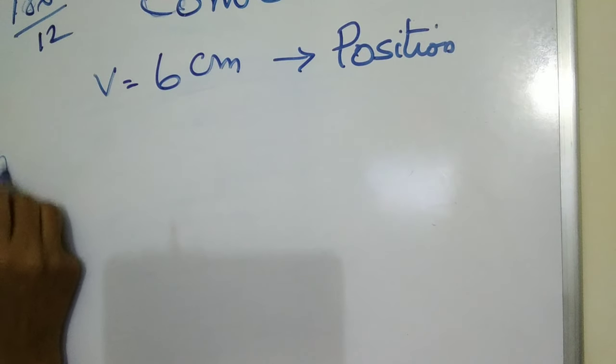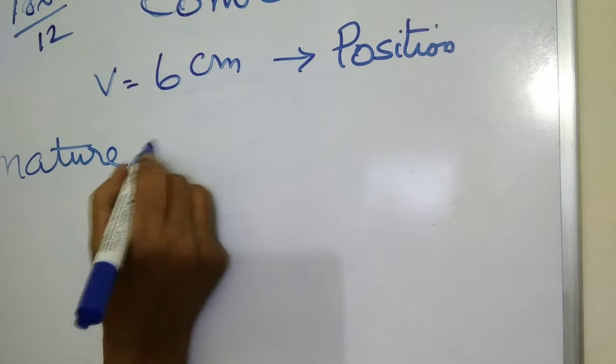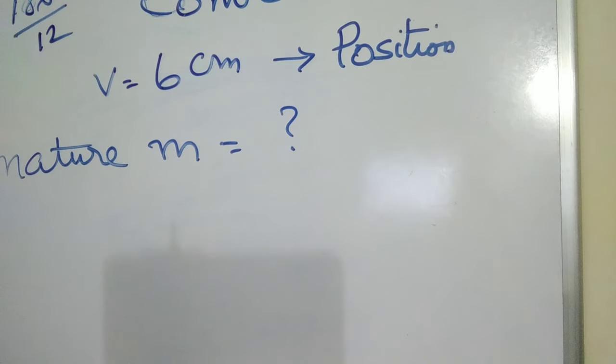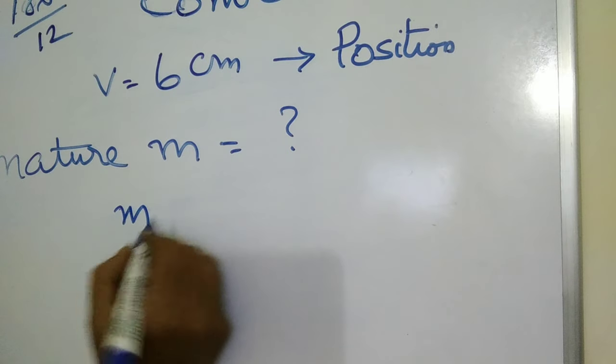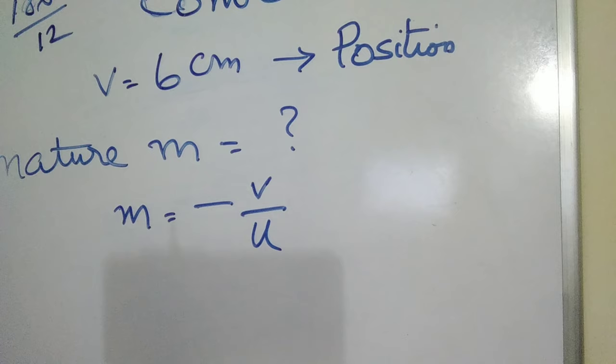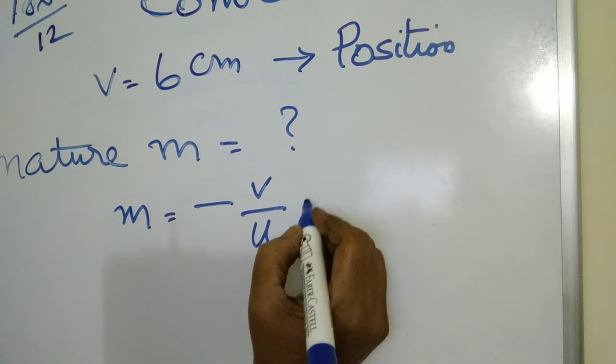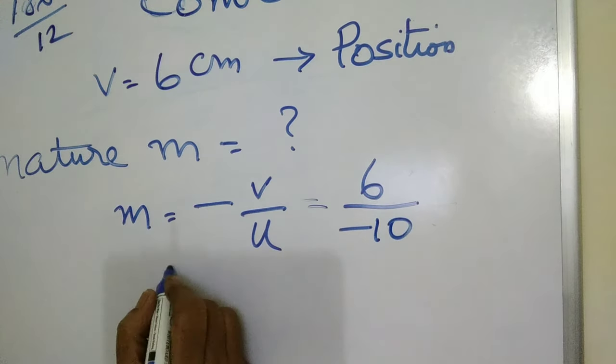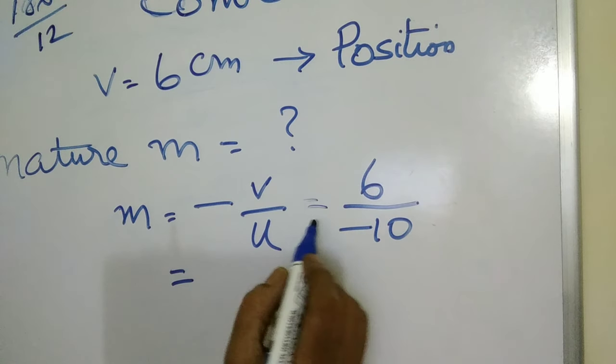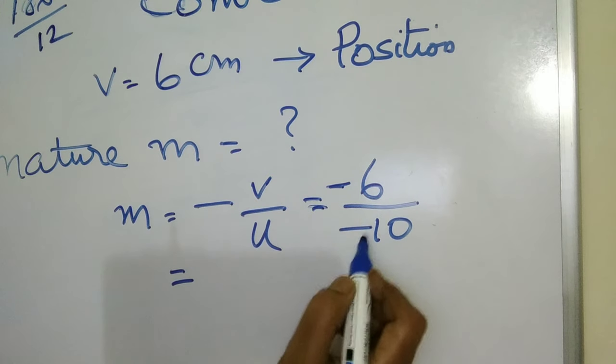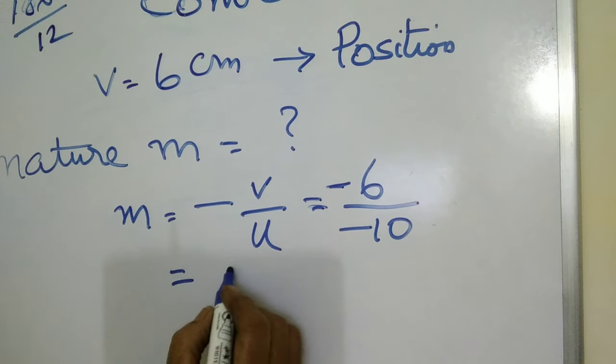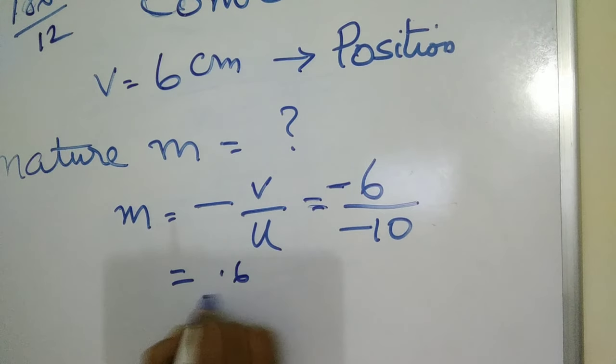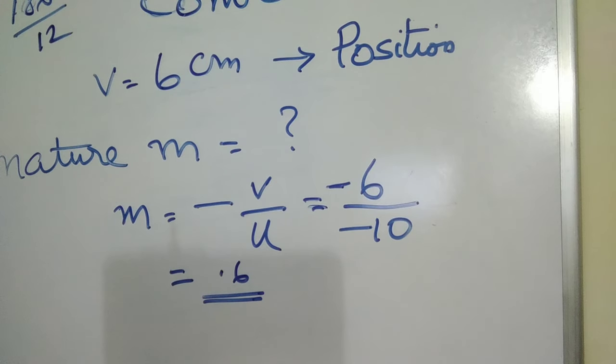Next we have to find the nature of the image. In order to find the nature we have to find the magnification. m equals minus v by u for mirrors. What is v here? Which is equal to 6 by u is minus 10. That is equal to minus 6 by minus 10, which is equal to plus 0.6. Is there any unit for magnification? No. Magnification is without unit.